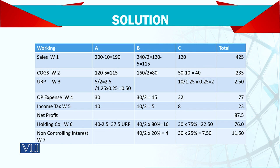For income tax: A's full tax is taken, B's is half since it was acquired mid-year, and C's is taken in full — giving a total of 23. Net profit is then calculated. The holding company working and non-controlling interest working are also prepared.